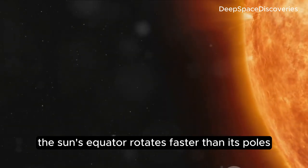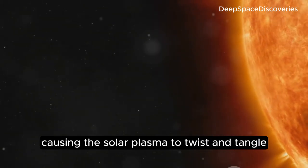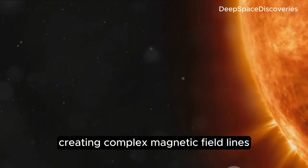The Sun's equator rotates faster than its poles, causing the solar plasma to twist and tangle, creating complex magnetic field lines.